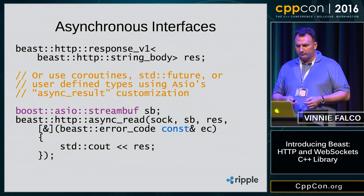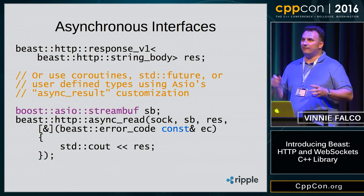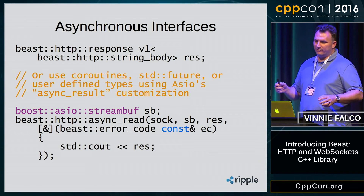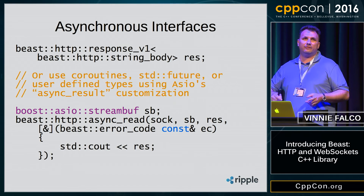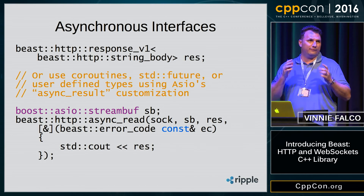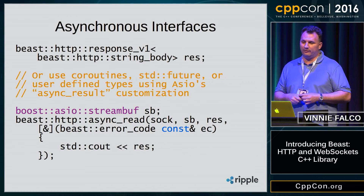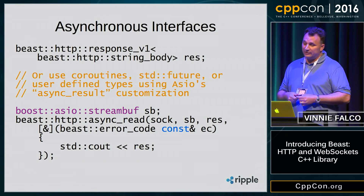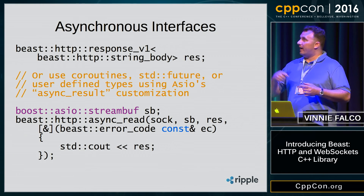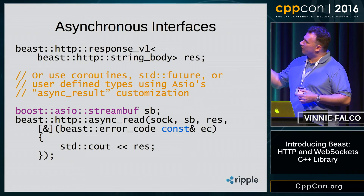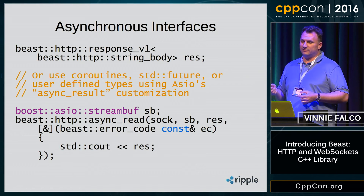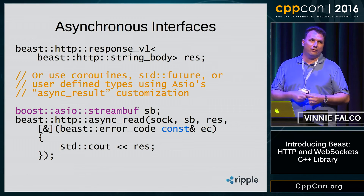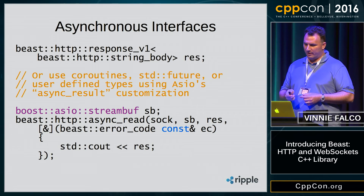Just like WebSocket, you have asynchronous interfaces for all the functions. They look just like ASIO functions with the same limitations and performance characteristics. Here we have an example of doing a read with a completion handler. That completion token could be a coroutine — stackful or stackless — a standard future, or your own user-defined type that meets the requirements.